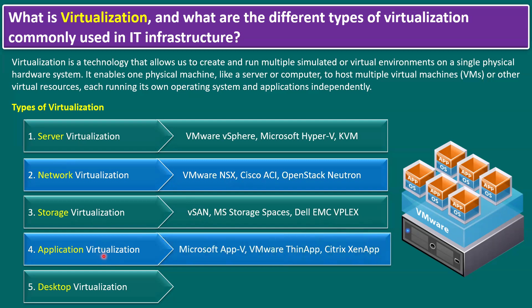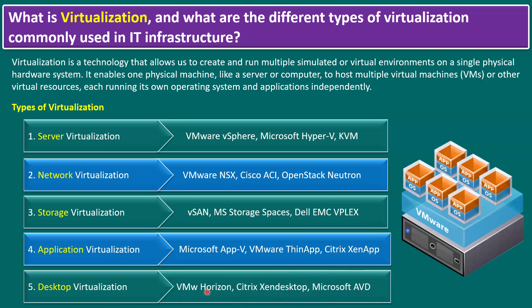For application virtualization, main examples are Microsoft App-V, VMware ThinApp, and Citrix Virtual Apps. Application virtualization runs applications in a virtual environment without needing to install them on physical hardware. For desktop virtualization, examples are VMware Horizon, Citrix Virtual Desktop (ZenDesktop), and Microsoft AVD (Azure Virtual Desktop). Desktop virtualization allows users to run multiple desktop environments from a central server.